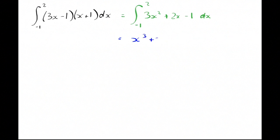Gives us x³ + x² - x, and that's between -1 and 2. So that gives us 8 + 4 - 2, all take away (-1 + 1 + 1).